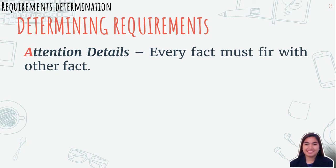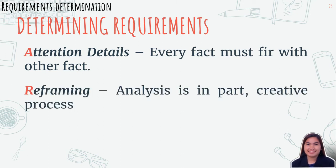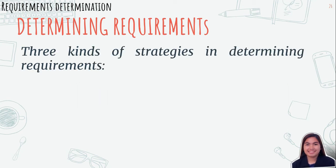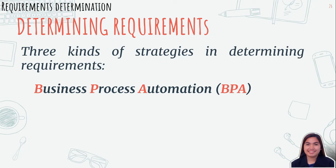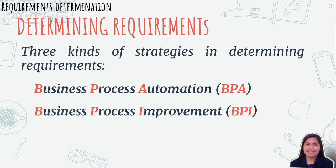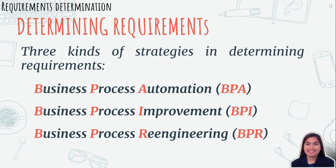Fourth is attention to details — every fact must fit with every other fact, because one element out of place means the ultimate system will fail. The last key characteristic is reframing — analysis is in part a creative process and you must challenge yourself to look at the organization in new ways. There are three kinds of strategies in determining requirements: Business Process Automation (BPA), which creates a small amount of change; Business Process Improvement (BPI), which creates a moderate amount of change; and Business Process Reengineering (BPR), which creates significant change that affects much of the organization.